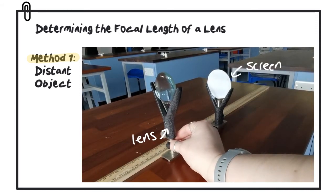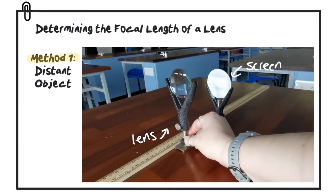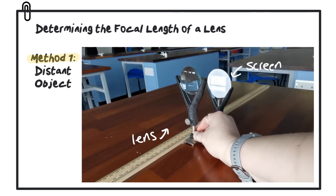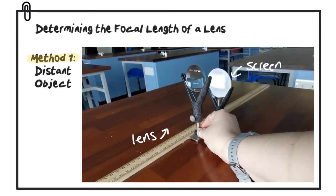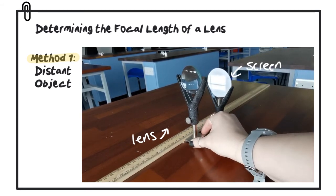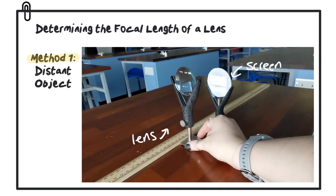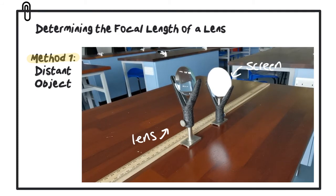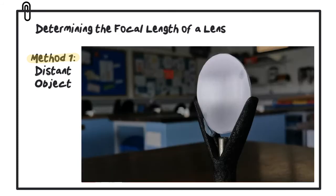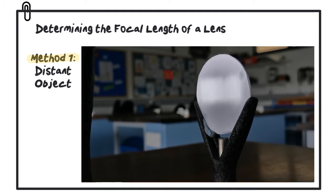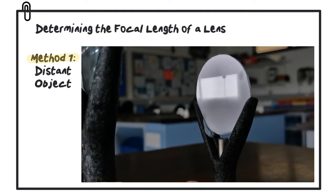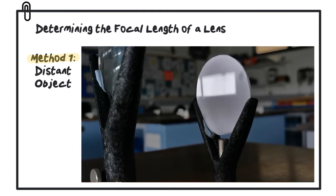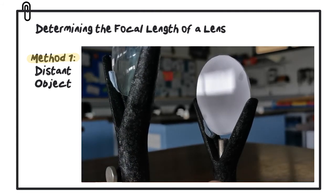We then adjust the position of the lens until we get a clear, sharp image formed on the screen. The image will be inverted, or upside down. As the lens moves closer to the screen, the image becomes sharper and more in focus. You can clearly make out the edges of the window.